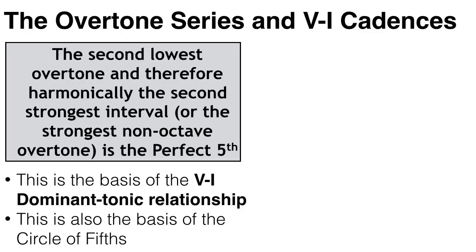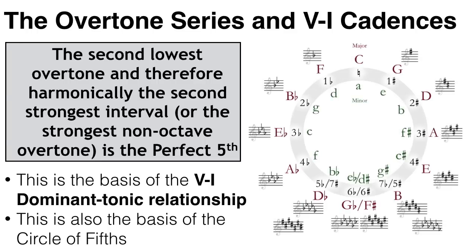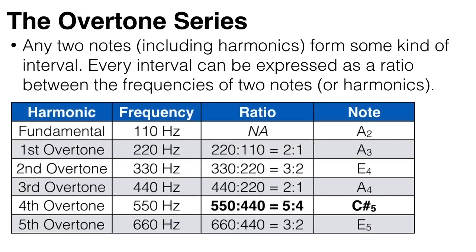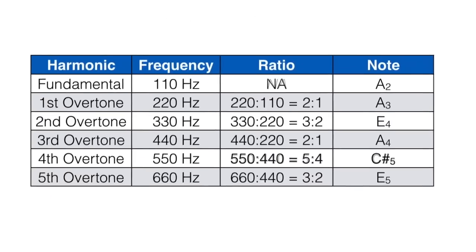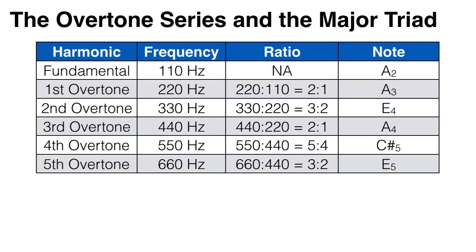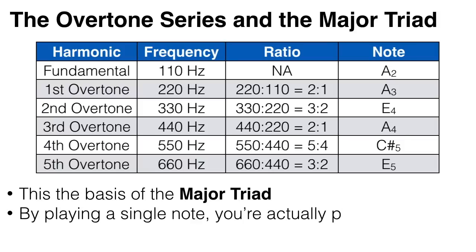So the second lowest overtone — and therefore harmonically the second strongest, or the strongest non-octave interval — is a perfect fifth. This is the basis of the 5-1 dominant tonic relationship and why moving down a fifth is such a harmonically strong-sounding sequence. This is also the basis of the circle of fifths, but we'll get to that in a future video. Next, looking at the fourth overtone compared to the third, we get 550 over 440, which gives us a ratio of 5 to 4 — an interval of a major third, in this case C sharp, a major third above A.